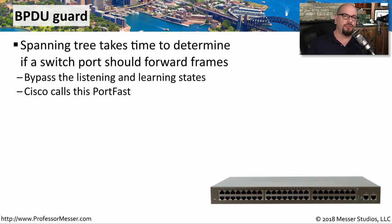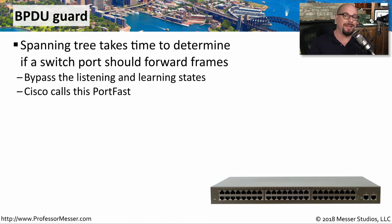One challenge with spanning tree is that network convergence may take some time. Spanning tree has to examine all traffic and then decide which ports need to forward and which need to be blocked. On the older original spanning tree protocol, this could take 20 to 30 seconds from the time someone connects until they can send any traffic. On some switches, you have the option to bypass this entire process — called BPDU Guard, or PortFast on Cisco switches — allowing devices to immediately begin communicating.